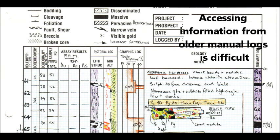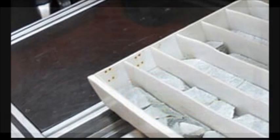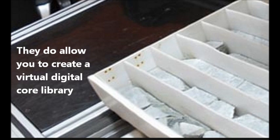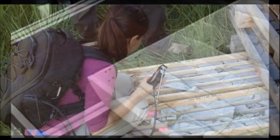The problem was incomplete or missing data, data that was incomprehensible, data in different formats, or missing or destroyed paper logs. Automated systems can eliminate many of these issues and allow for the creation of a digital core archive, but they are large, complicated, and expensive. In addition, they sometimes overwhelm the user with non-essential data.